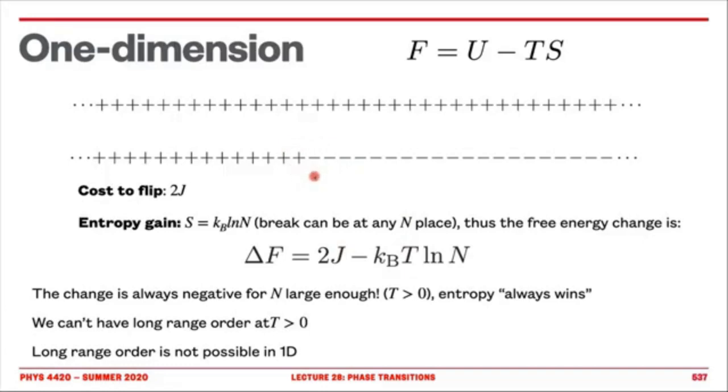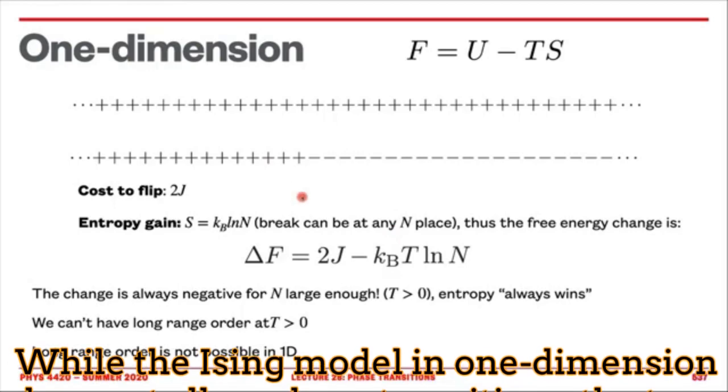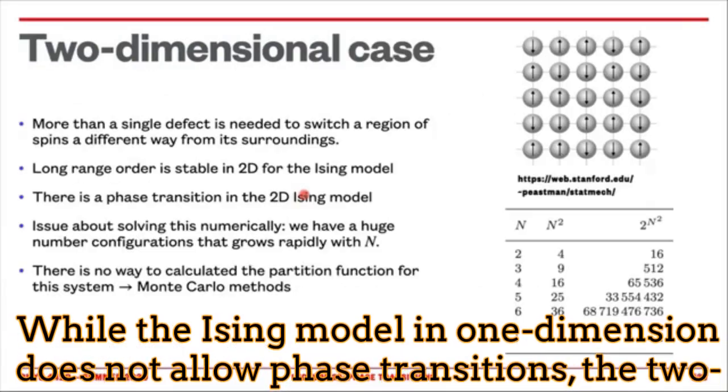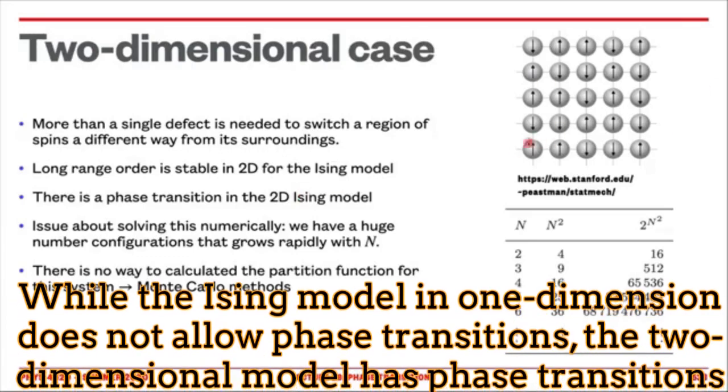Something even more amazing about the Ising Model is the fact that the physical consequences at the end depend on the number of dimensions. Then, for example, in the one-dimensional case, we don't have phase transitions. Instead, for the two-dimensional case, we have a clear phase transition.